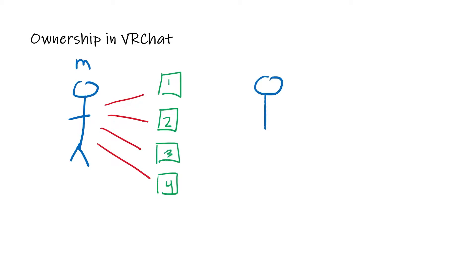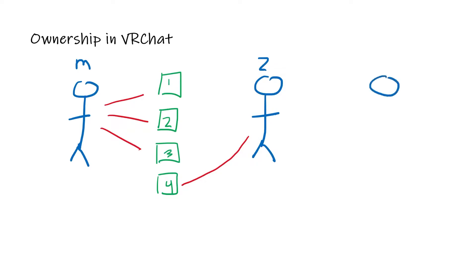If another player joins — we'll call this player two — player two is receiving updates about the objects from the room master. If a player tries to interact or pick up another object, something called ownership transfer happens, where ownership is transferred to player two. Player two becomes responsible for transmitting the state of that game object. If a third player joins, they receive updates from both player two and the room master, and ownership can transfer again when they interact.